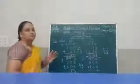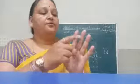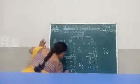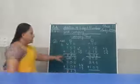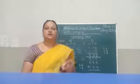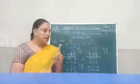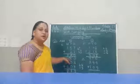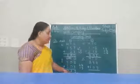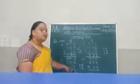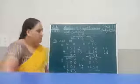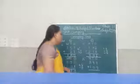5 plus 3: counting 5 forward 3 gives 8. The result is 0 in the ones carry position. So 508 plus 307 is equal to 815.